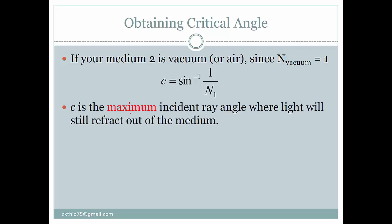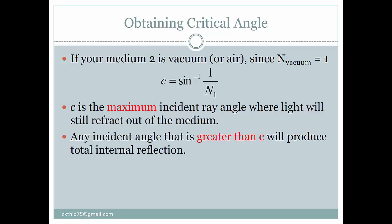So c is the maximum incident ray angle where the light ray will still refract out of the medium, with the refracted angle equal to 90 degrees. Anything more than that will produce total internal reflection.